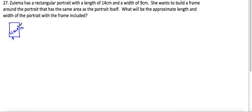And then we're going to build this frame around the portrait, which really it would be the same distance from the portrait all the way around. And this orange red part should also have an area of 126 square centimeters.